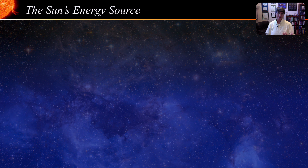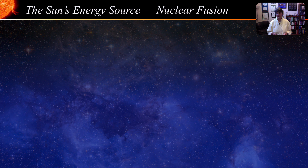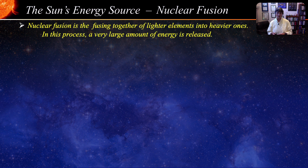So how does the sun and all stars generate all this energy? The answer, of course, is nuclear fusion. Nuclear fusion is the fusing together of lighter elements into heavier ones — for example, the fusing of hydrogen into helium — and in this process a very large amount of energy is released. Let's take a look at how the sun actually does this. This is the proton-proton chain reaction that occurs in the core of the sun, but we will see nuclear fusion in a nutshell: 75% of the sun is made of hydrogen, so we start with four hydrogen nuclei, or simply four protons.